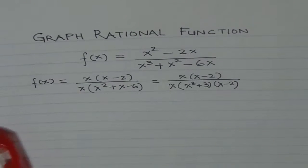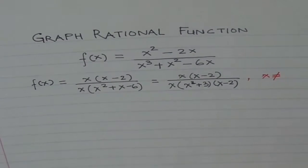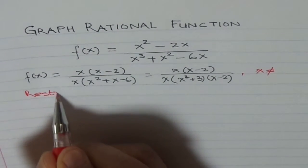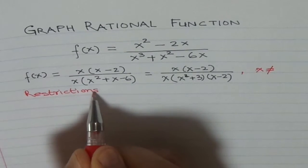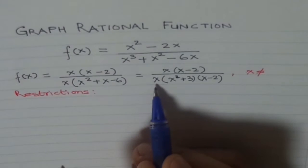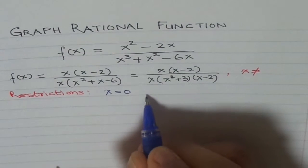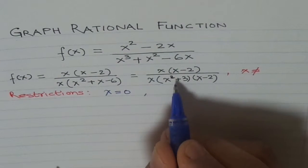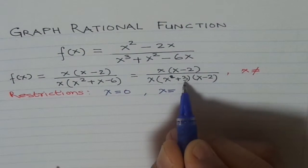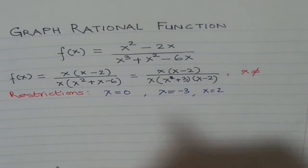Restrictions are — let me put it in red — that x is not equal to 0, because each factor in the denominator must be checked. So x is not equal to 0. The second restriction: setting x plus 3 equal to 0 means x cannot equal minus 3. And from x minus 2, x cannot equal 2. So these are our three restrictions.